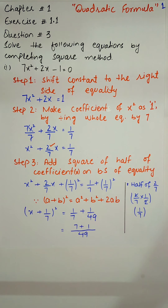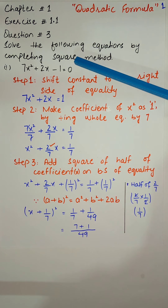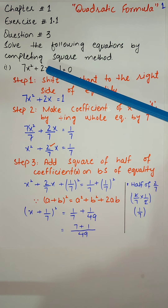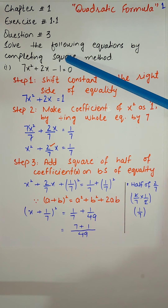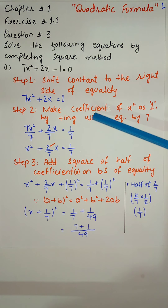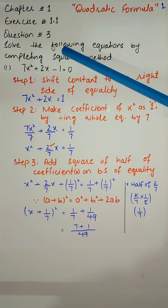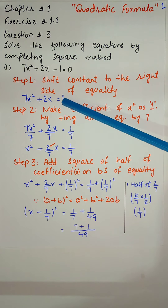The question is 7x² + 2x − 1 = 0. In the first step, you must note that you will shift the constant — which is minus 1 — to the right side of equality. The coefficient of x² is 7 and the coefficient of x is 2. So, the first step is to shift the constant to the right side. We shift minus 1, and it becomes 7x² + 2x = 1.